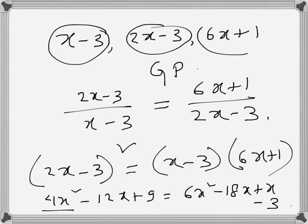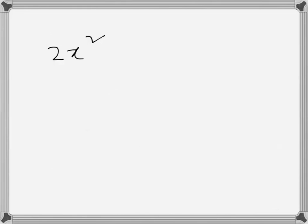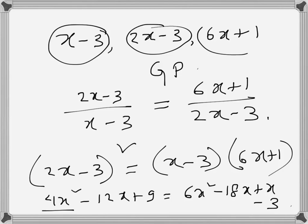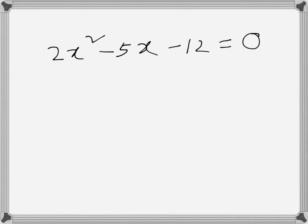negative 12x goes on the right hand side, it becomes negative 5x, and then this one goes on the right hand side becomes negative 12. So we